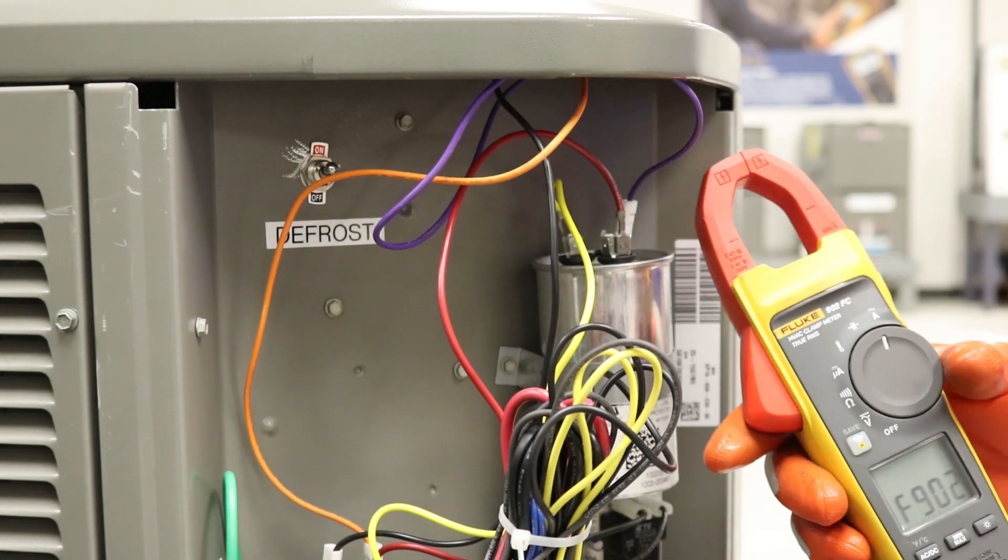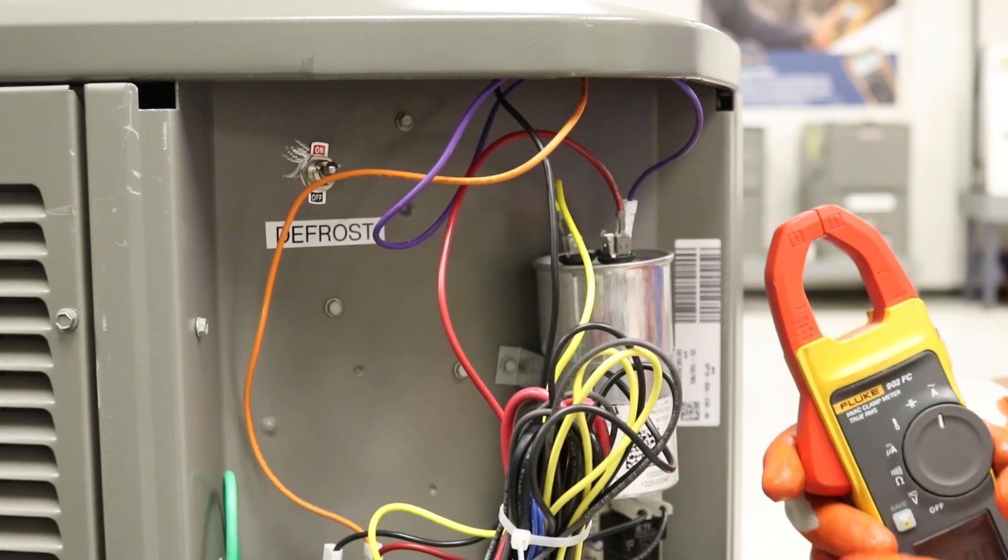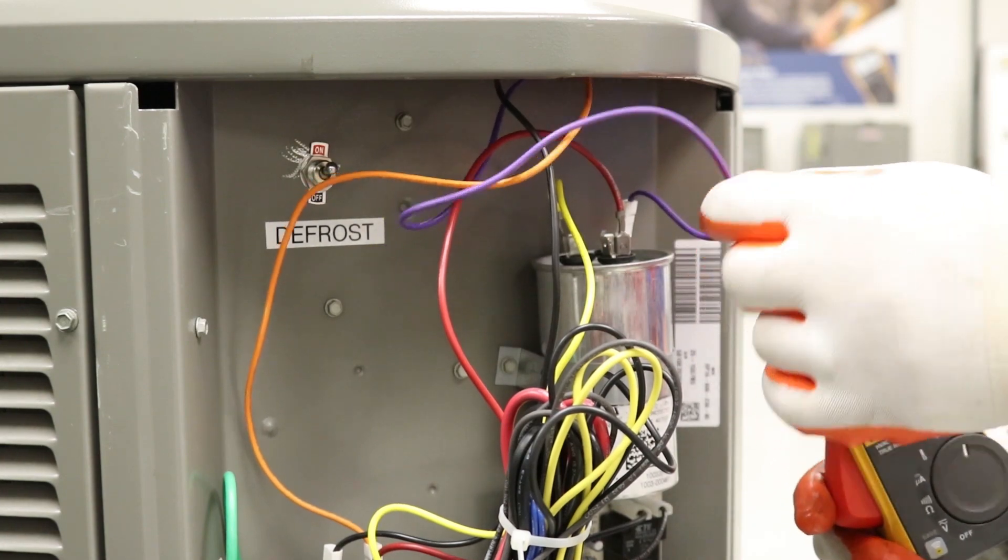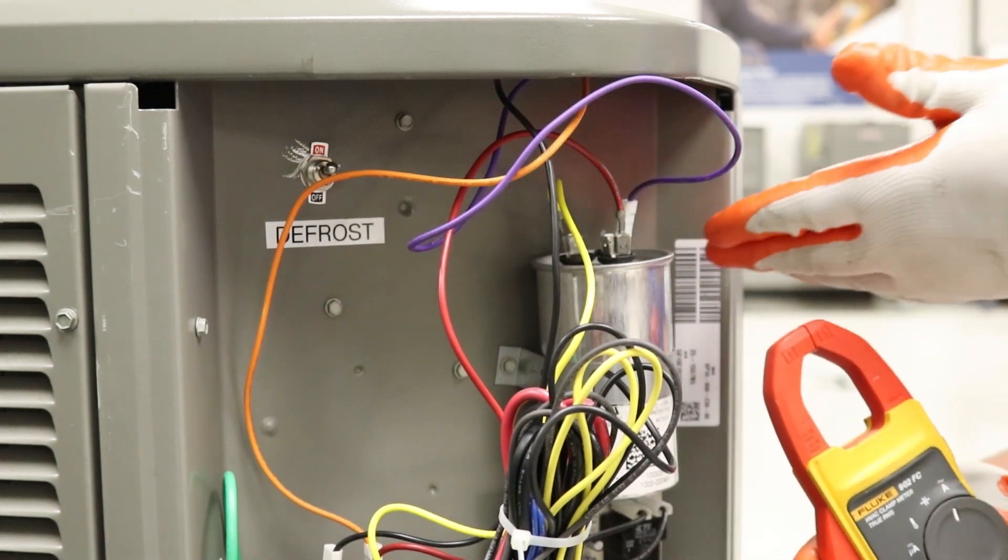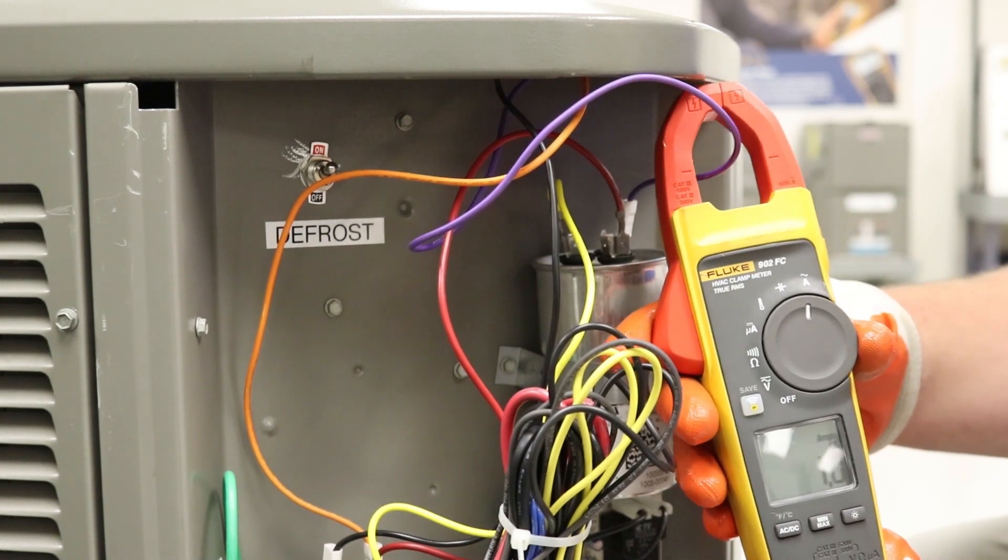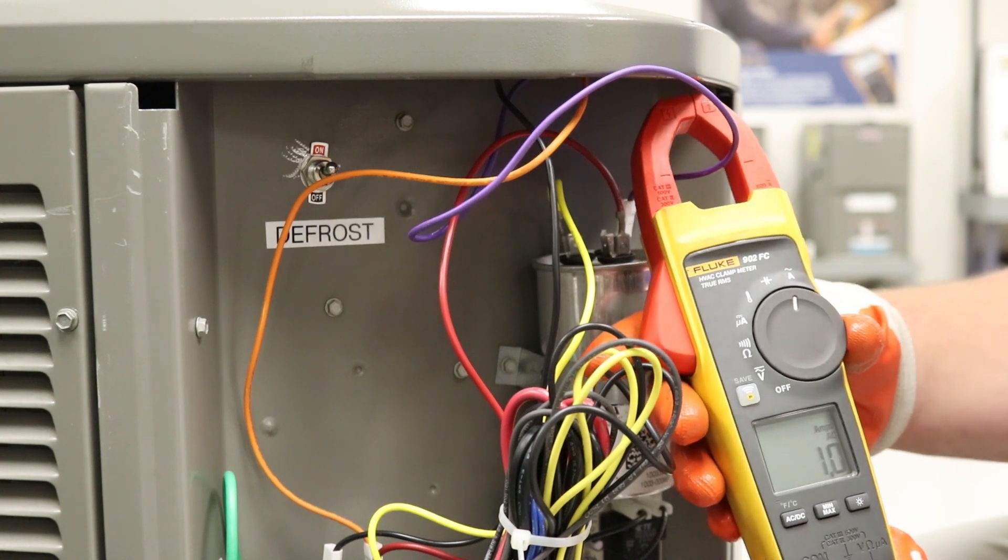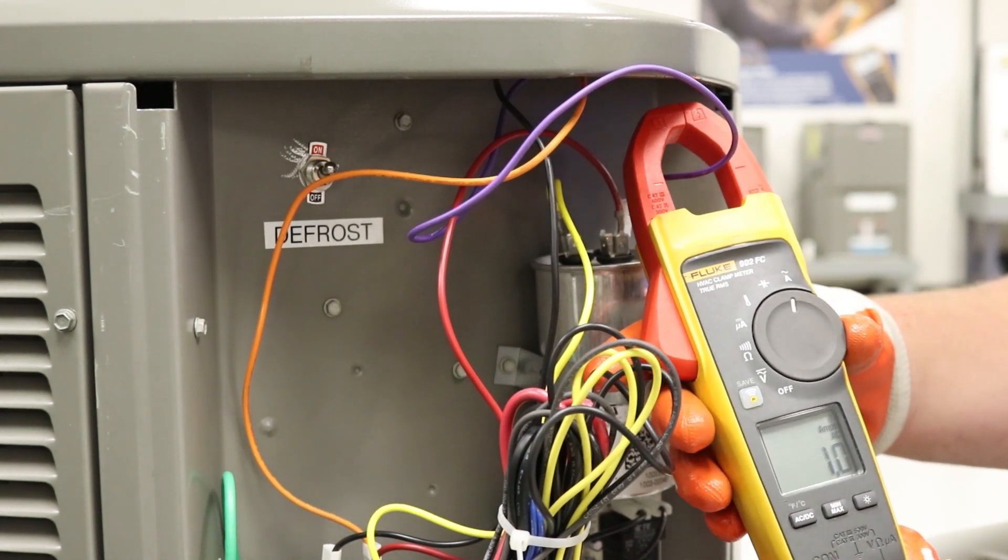Once our meter comes on, first, we're going to check the amperage of the fan terminal, which you can tell it's hooked up and says right on top of the capacitor that that is the fan terminal. So we'll go ahead and hook up our meter. And it says that our amperage on the fan terminal right now is 1.0.